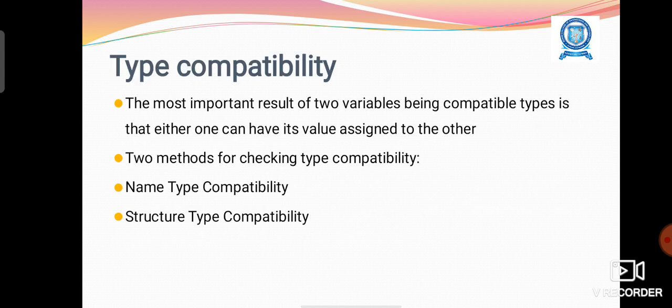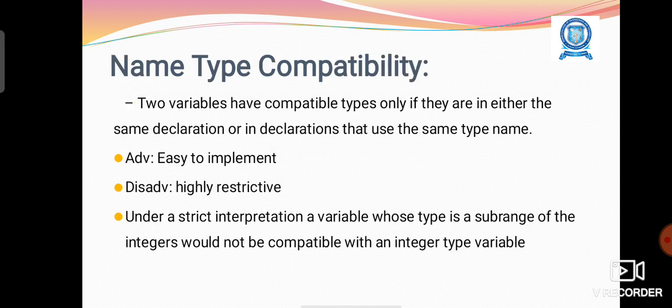Type compatibility: Two methods for checking type compatibility are name type compatibility and structure type compatibility. Name type compatibility means two variables have compatible types only if they are in either the same declaration or in declarations that use the same type name.